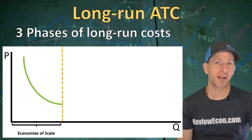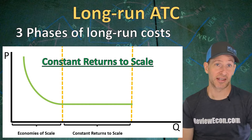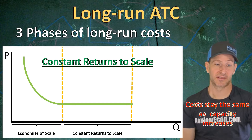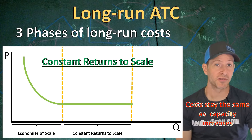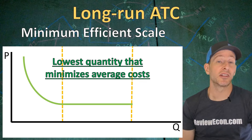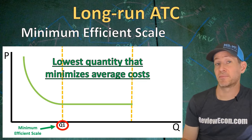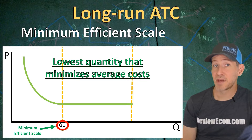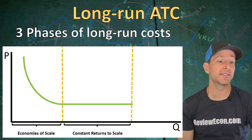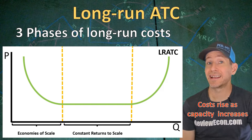The next portion of the long run average total cost curve is constant returns to scale — that is a horizontal range of the long run average total cost curve. In this phase, increasing capacity means we will have constant long run costs. On the horizontal portion of the long run average total cost curve, we can find the minimum efficiency scale. The minimum efficiency scale is the lowest quantity that a firm can produce while minimizing long run average costs. If a firm must compete with costs of production being minimized, this is the minimum scale of production that the firm must reach. The third and final phase is the upward sloping portion — as the firm increases capacity, average total costs are going to increase in the long run.